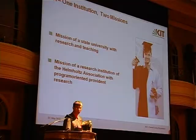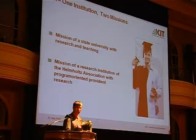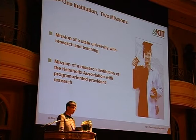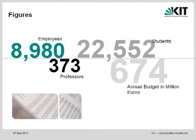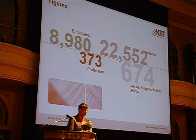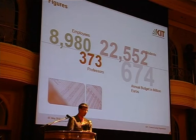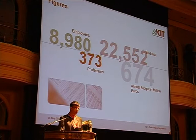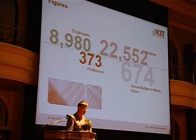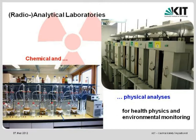KIT — Karlsruhe Institute of Technology — has two missions. One, we are a university, and second, we are a large scale research facility. Large scale means our projects run starting from five years to never ending. We have roughly 9,000 employees, 22,500 students in total, and almost 400 professors teaching at KIT. We also have several professors at other universities. The annual budget is not a small one — roughly half for the university side and half for research.